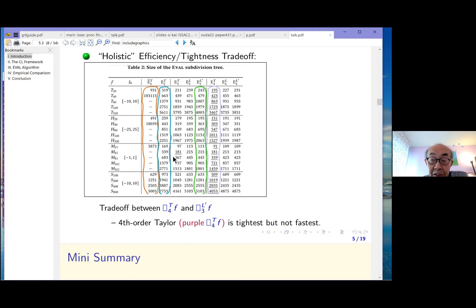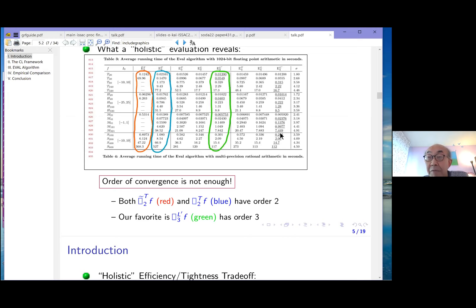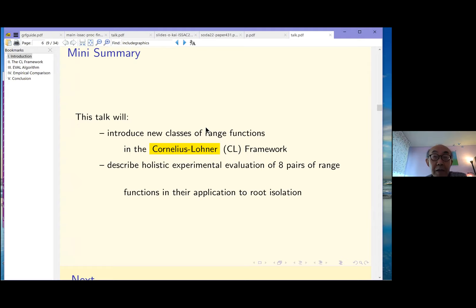This table illustrates that the fourth-order Taylor, the purple column, is always the tightest but it's not the fastest. The fastest is usually this, the fourth-order Lagrange L prime. The fourth-order here is the fastest generally but it's not far off from our favorite. A mini-summary of what this talk will be about is that I'll talk a little bit more about the CL framework, Cornelius-Loner framework, in which we can discuss all these range functions and give a little bit more detail about our experimental evaluation.